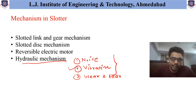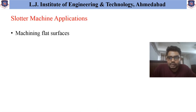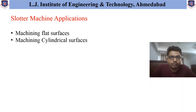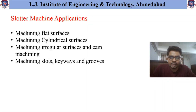These are the different mechanisms used in the slaughter machine as per requirement. The major applications of the slaughter machine are: machining flat surfaces, machining cylindrical surfaces, machining irregular surfaces, cam machining, and most importantly machining slots, keyways, and grooves as per requirement on the component.